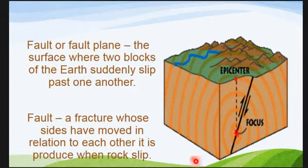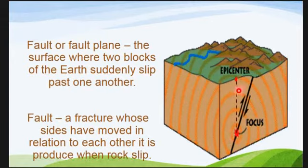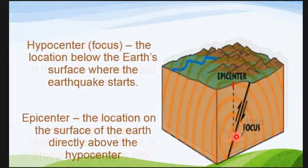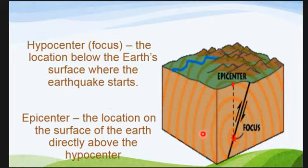We have what we call a fault or fault plane. The fault plane is the surface where two blocks of the earth suddenly slip past one another. A fault is a fracture whose sides have moved. As they grind against each other, energy is stored. Once that energy is released, that is the earthquake. The point where the earthquake starts is called the hypocenter or focus.